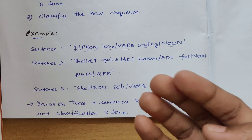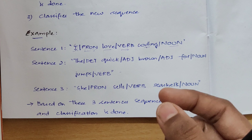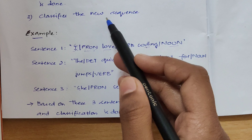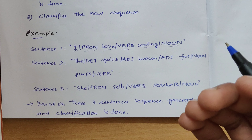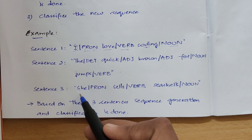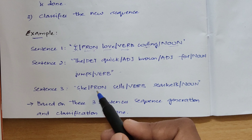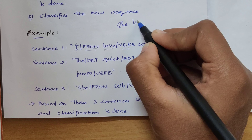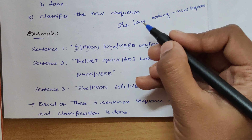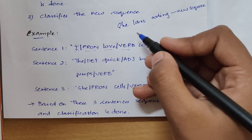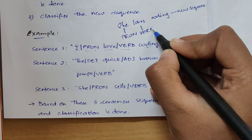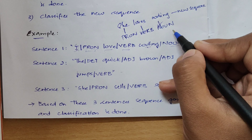After generating the new sequences, the model finds the parts of speech for that new sequence — that is the classification step, where it adds the corresponding hidden states to the generated sequence. For example, if the system generates 'she loves coding', it will also generate the parts of speech: for 'she' it gives pronoun, for 'loves' it gives verb, and for 'coding' it gives noun. This is the classification of the new sequence.